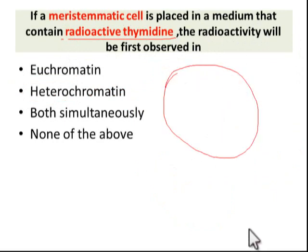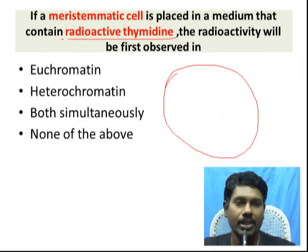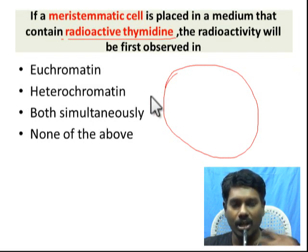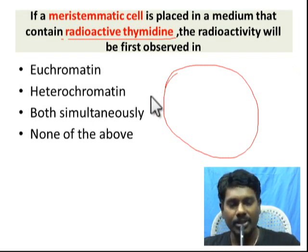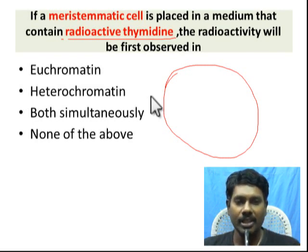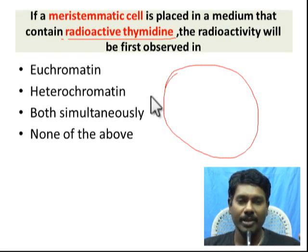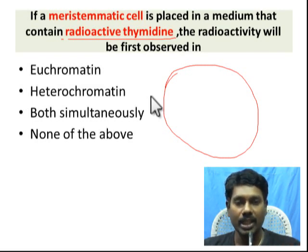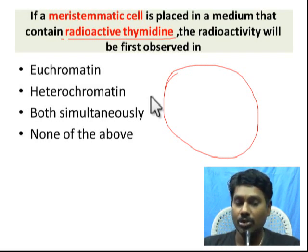Meristematic cells are the most important aspect — they are essentially the stem cells. They possess the potential to differentiate into any type of cell, such as cardiocytes, hepatocytes, or other cell types. Similarly, meristematic cells in plants have the same potential; they can differentiate into parenchyma, collenchyma, or aerenchyma of plant cells. That is the potential of meristematic cells, so cell division rate is very high.